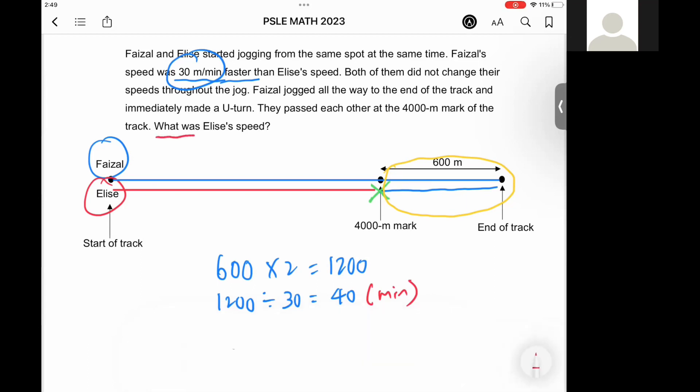We can now find the answer to this question. They want to find Elise's speed. Elise jogged a distance of 4000 meters. So we take 4000 meters divided by the time she took, which is 40 minutes.